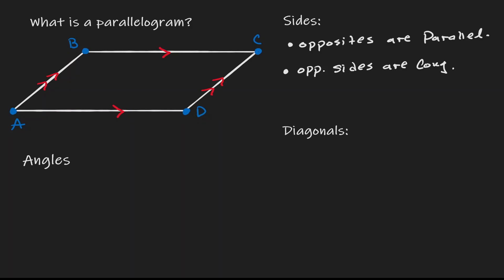So if that's the case, then therefore BC is congruent to AD. And in addition, AB is also congruent to DC.